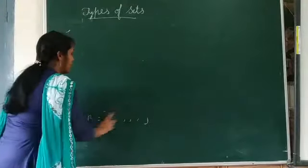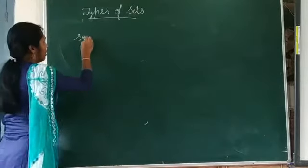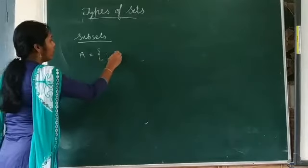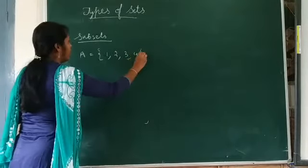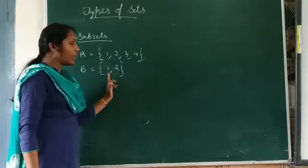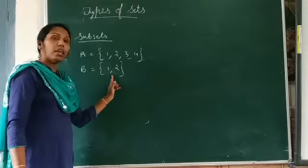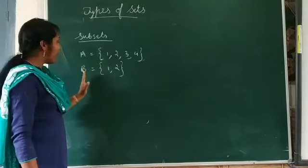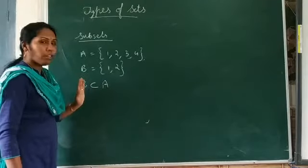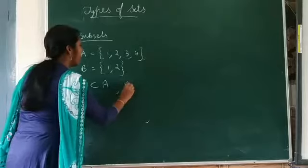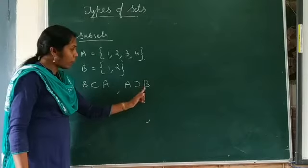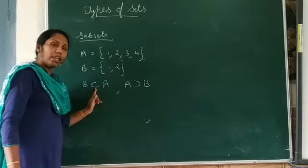Next one is subsets. Let us see what are subsets. If A is equal to {1, 2, 3, 4} and B is equal to {1, 2}, we can see that all the elements of B are also elements of A. All the elements of B are contained in A. Therefore, we can say that B is a subset of A. This symbol denotes 'subset of'. B is a subset of A, and we can also say that A is a superset of B. This symbol denotes 'subset of' and this symbol denotes 'superset of'.